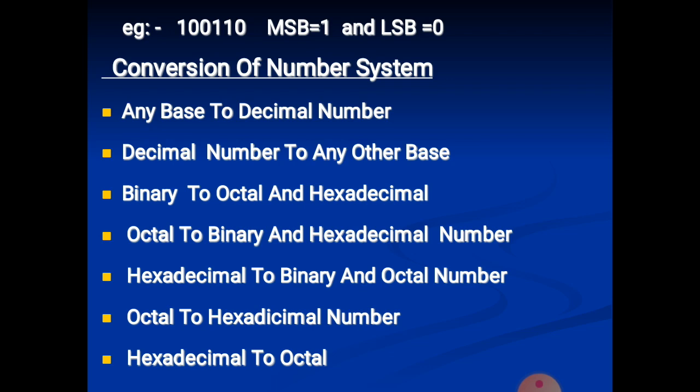Now, conversion of number systems. We have divided conversions into 7 types: first, any base to decimal; second, decimal to any other base; third, binary to octal and hexadecimal; fourth, octal to binary and hexadecimal; fifth, hexadecimal to binary and octal; sixth, octal to hexadecimal; and seventh, hexadecimal to octal.